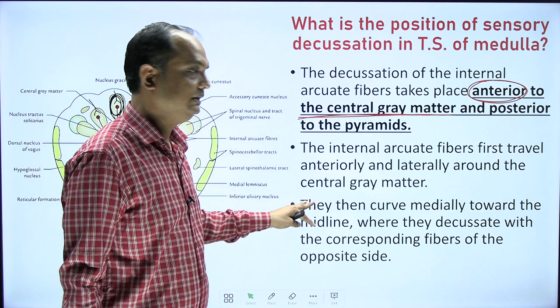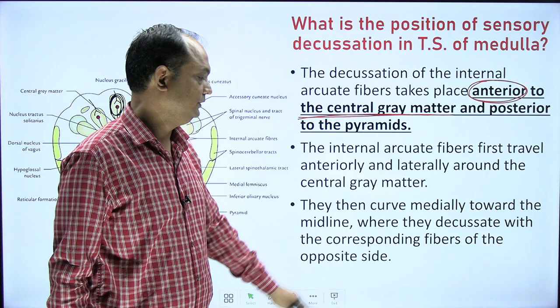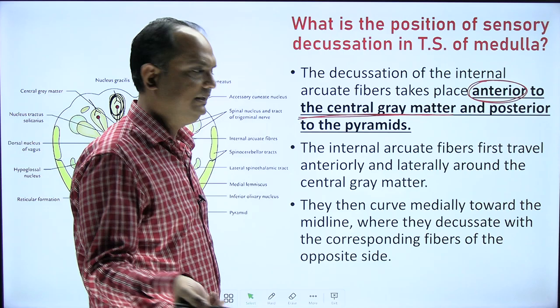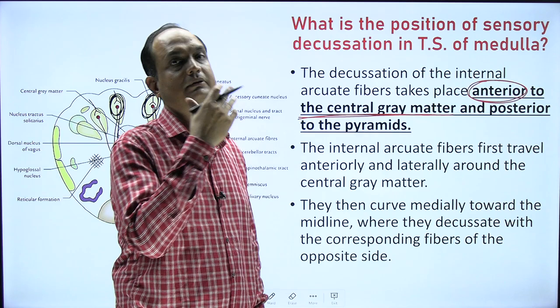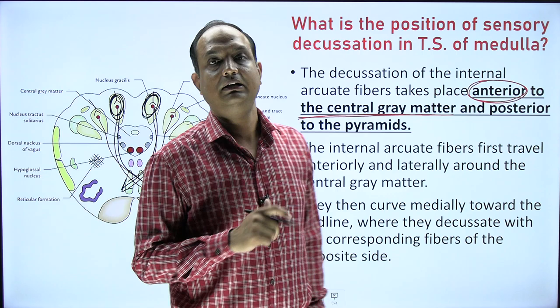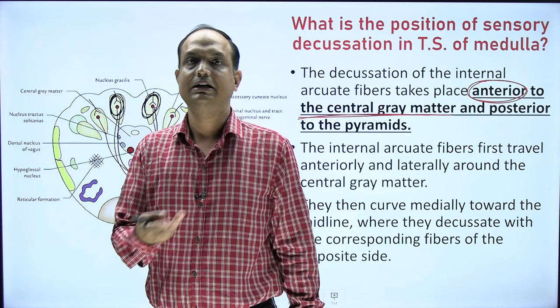The internal arcuate fibers first travel anteriorly, then laterally around the central gray matter, and curve medially towards the midline where they decussate with the corresponding fibers of the opposite side. Right fibers go to the left, left fibers go to the right. When drawing this decussation, you must draw it in the anterior part of the section — that means anterior to the central gray matter.